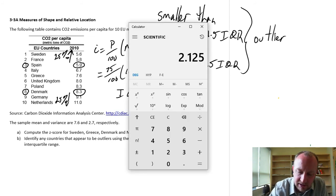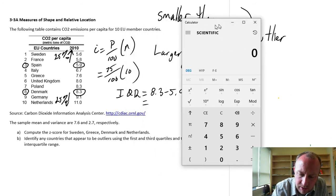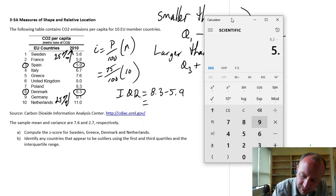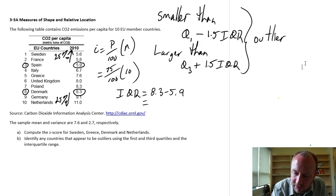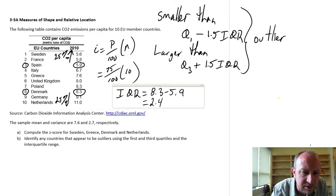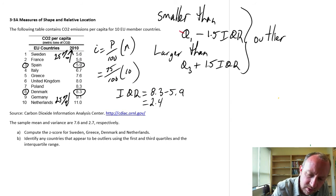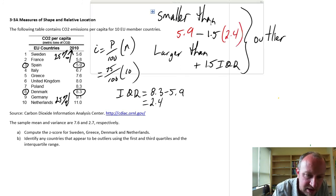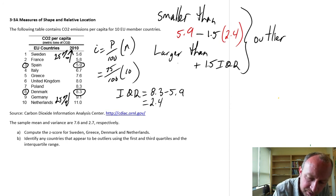Let's get that calculator up. 8.3 minus 5.9. So the IQR is 2.4. So now if I fill in our values. Q1 we calculated as 5.9 minus 1.5 times the IQR which was 2.4. Q3 we calculated as 8.3 plus 1.5 times the IQR which is the same 2.4.